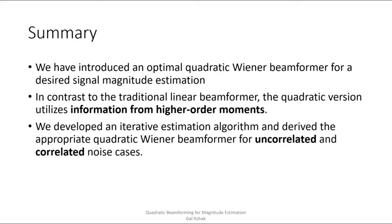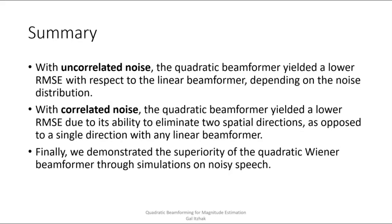We developed an iterative estimation algorithm and derived the appropriate quadratic version of the Wiener beamformer for the two uncorrelated and correlated noise cases. With the uncorrelated noise, we showed that the quadratic beamformer yielded a low RMSE due to its ability to eliminate two spatial directions simultaneously, as opposed to a single direction with any linear beamformer.